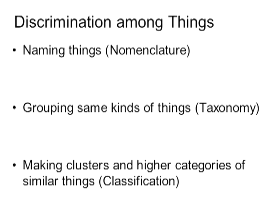Likewise, we group things that are similar in some way. Sometimes we may have a grouping where several things share the same name. In other cases, we may group things at a higher level — all of these things are similar in some way — and give them some higher-level name, even though as individuals they have different names. Thirdly, we make clusters and create categories of similar things, and we develop whole classification systems.